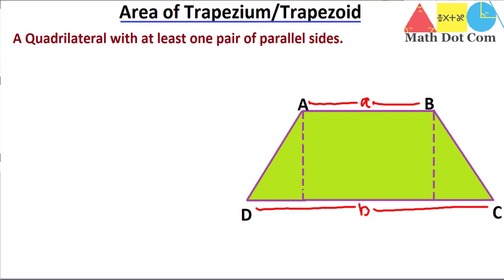Both conditions are met, so this is a trapezium or trapezoid. Keep in mind that trapezium and trapezoid are the same — trapezoid is used in American or Canadian English; otherwise the shape is the same with two names. To identify a trapezium, you need to check for two parallel sides and two non-parallel sides, as is clear from the given figure.